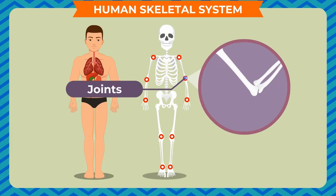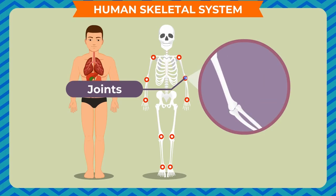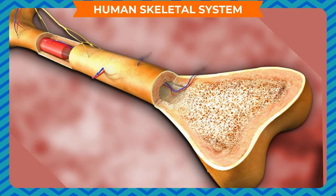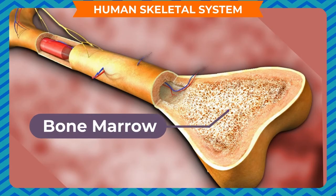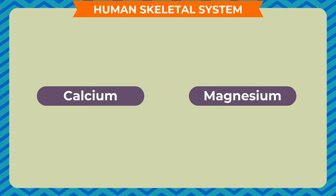The skeletal system helps in the movement of fingers, legs, arms and many other parts of the body. Bones are hard from outside but soft and spongy on the inside. The inside of long bones contains a soft substance called bone marrow. Blood cells are formed in the bone marrow. Bones also store essential body minerals like calcium and magnesium.